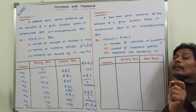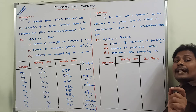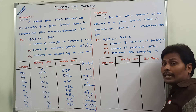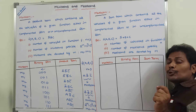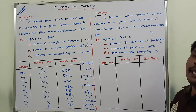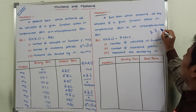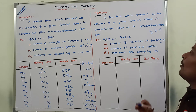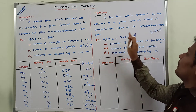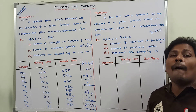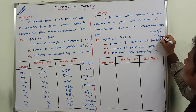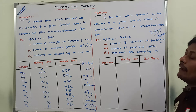Whenever a sum term is called a max term, we first check that it contains all the variables of the given function. Then we check which variable is complemented and which is uncomplemented. For example, ā + b̄ + c contains all three variables either in complemented or uncomplemented form, so this sum term is called a max term.